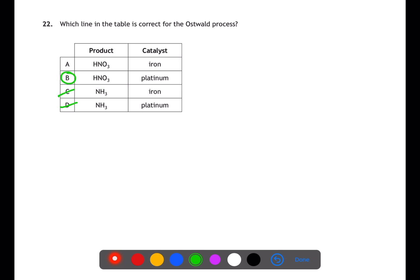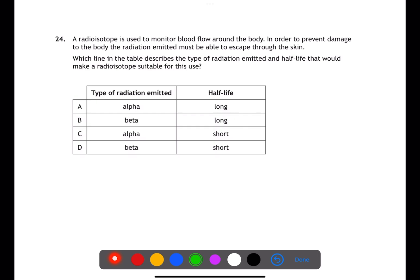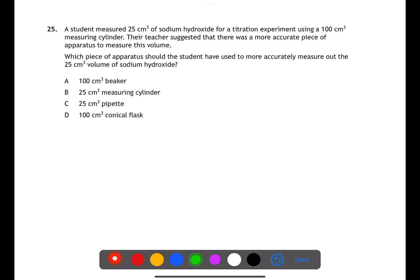Question 23 is testing your knowledge of half-life. Half-life is constant for each radioisotope, so the half-life of the radon in the plant will be the same. Question 24 is looking at radioisotopes for medical use. If the radioisotope needs to be emitted and escape through the skin, it needs to penetrate through the skin. Therefore, we cannot use alpha, which would be blocked by paper or skin, so we need to use beta. This would be answer B or D. If you're using a radioisotope within the body, you want the half-life to be relatively short so it will decay within the body. Therefore, the answer is D.